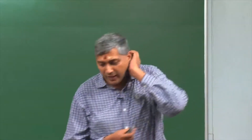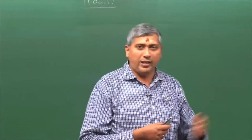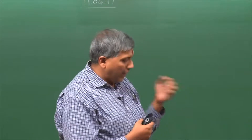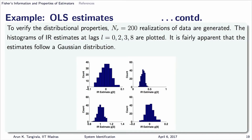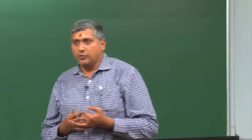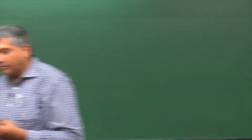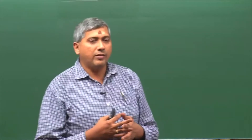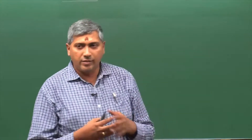What we will do today is recap some of the least squares related material when it comes to estimating the models G and H. We have already gone through an example in the last class where we looked at estimation of an FIR model, talked about the distribution of the estimates, the efficiency of the estimates, and went through examples telling us when the least squares estimates can be expected to be efficient and consistent.